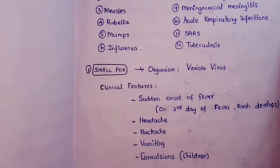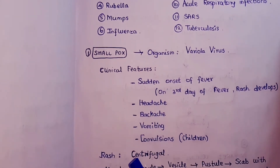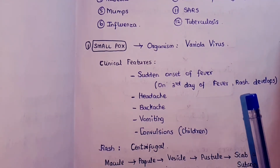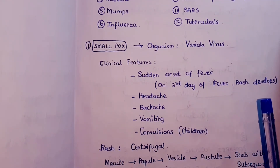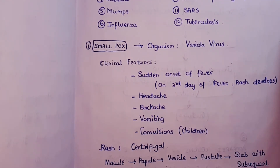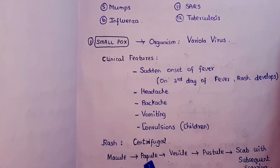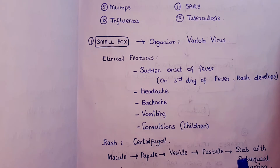In children, convulsions occur in smallpox. The rash develops on the third day of fever and passes through the following stages: macule, then papule, vesicle, pustule, which then develops into a scab with subsequent scarring.